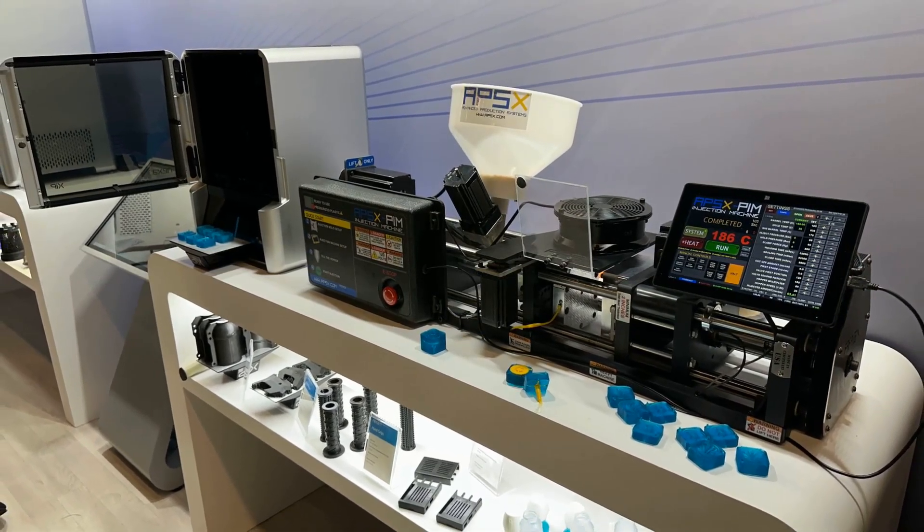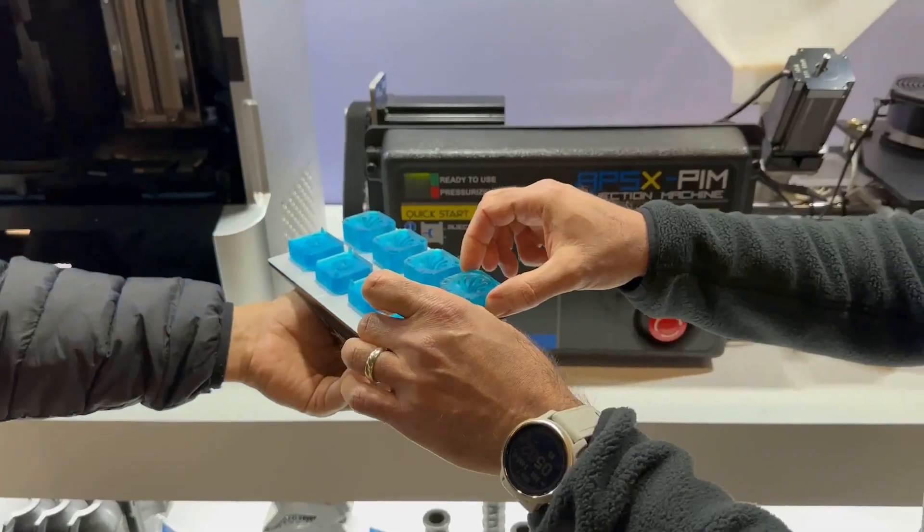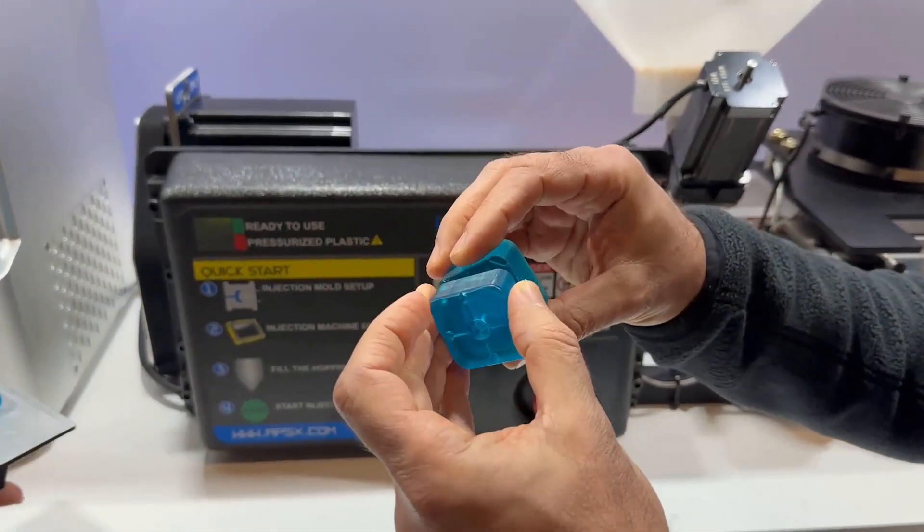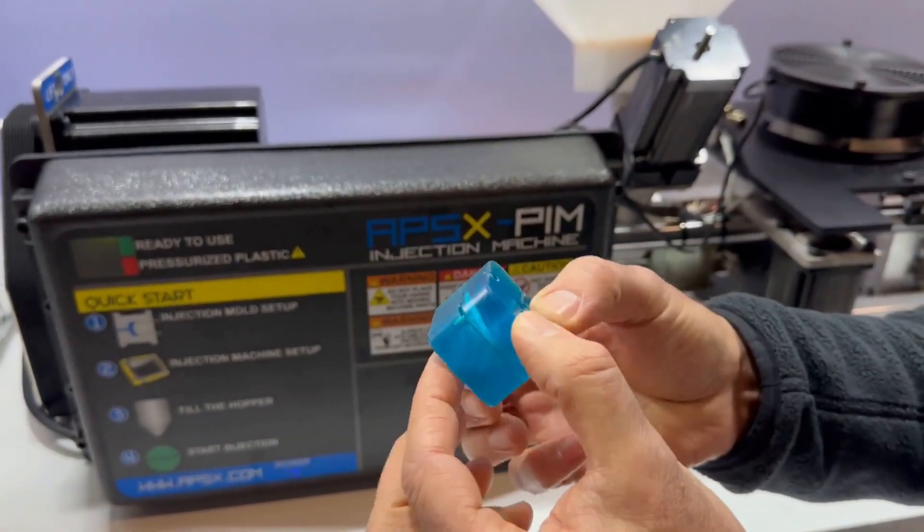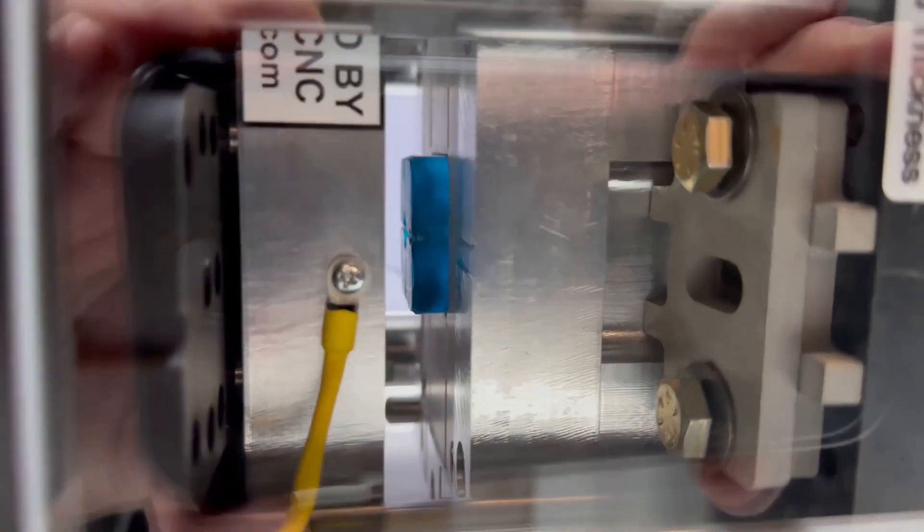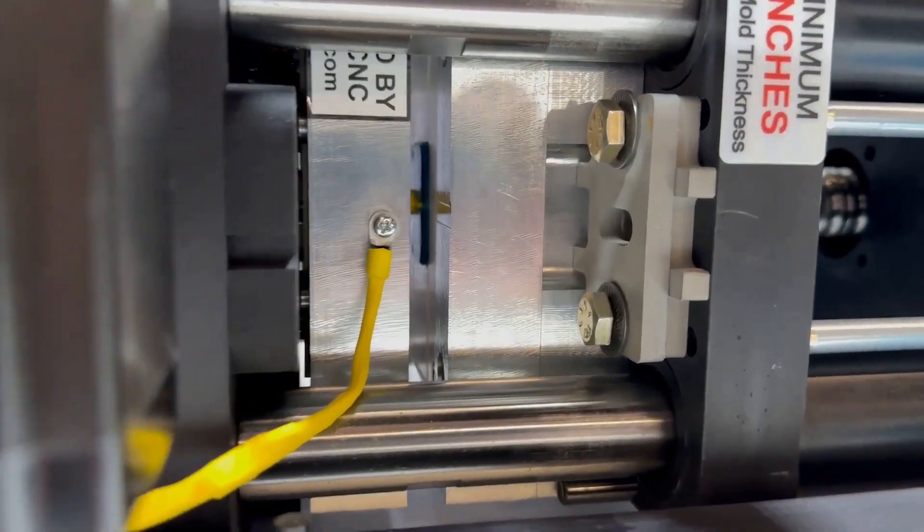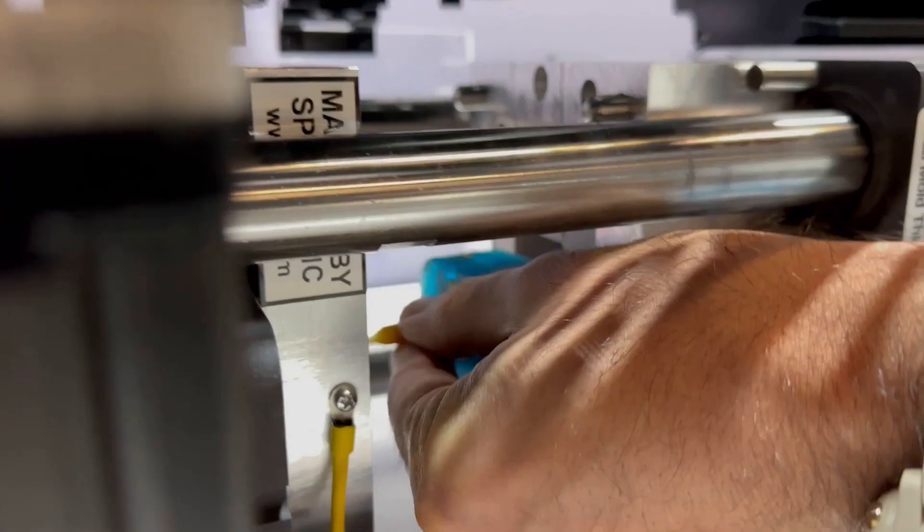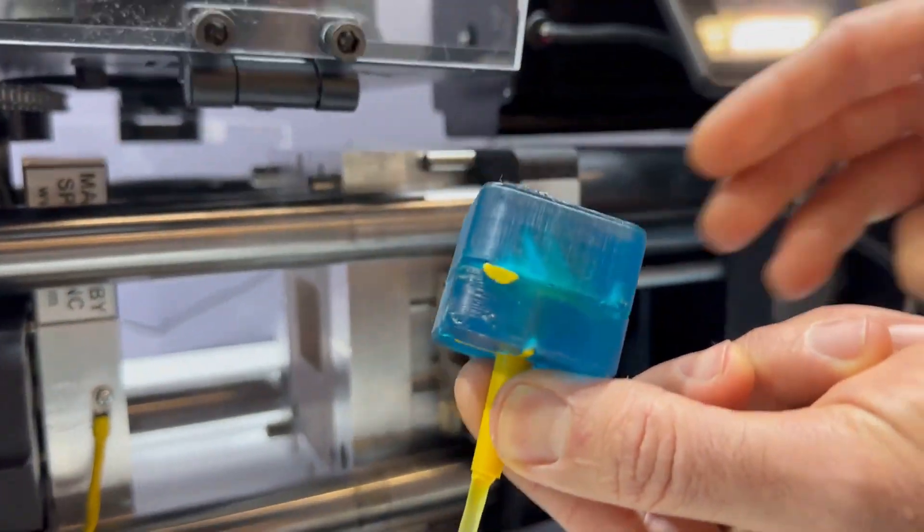By combining the precision of 3D printing with the scalability of injection molding, you have a winning combination for accelerating your product development process. Not only does this save time, but it also significantly reduces costs compared to traditional manufacturing methods.